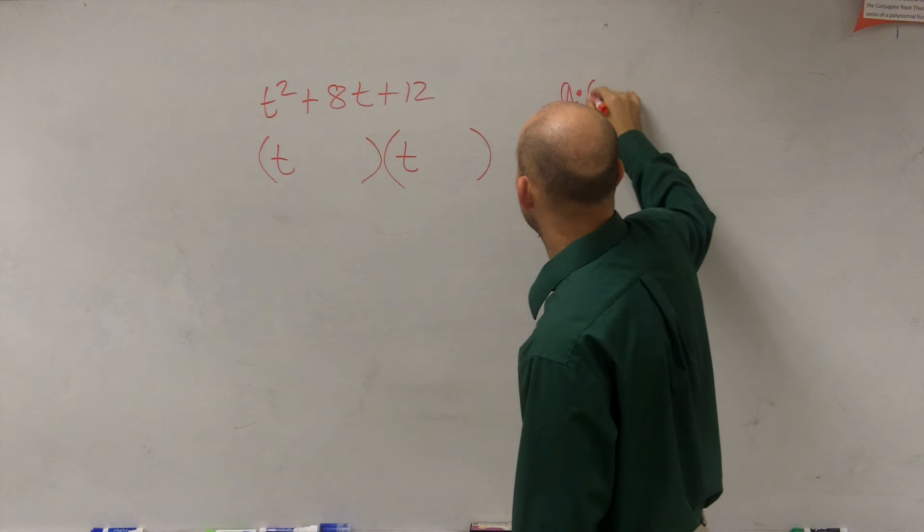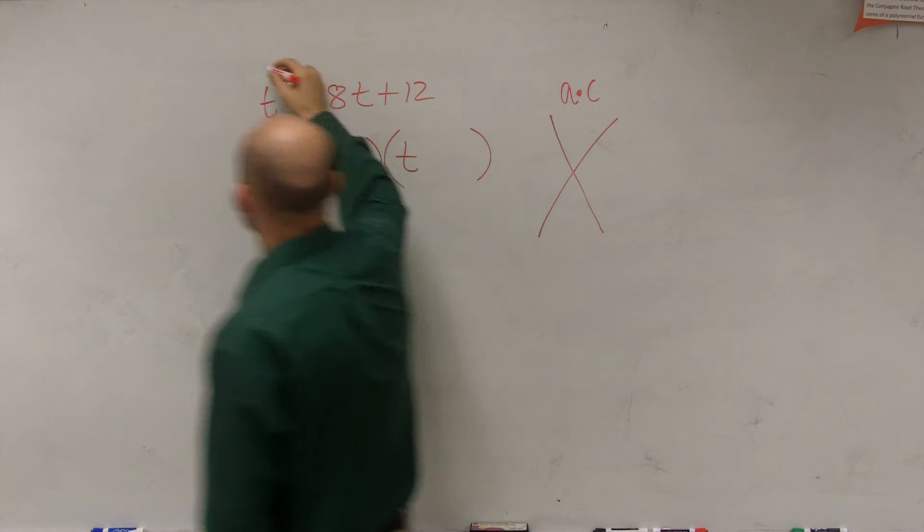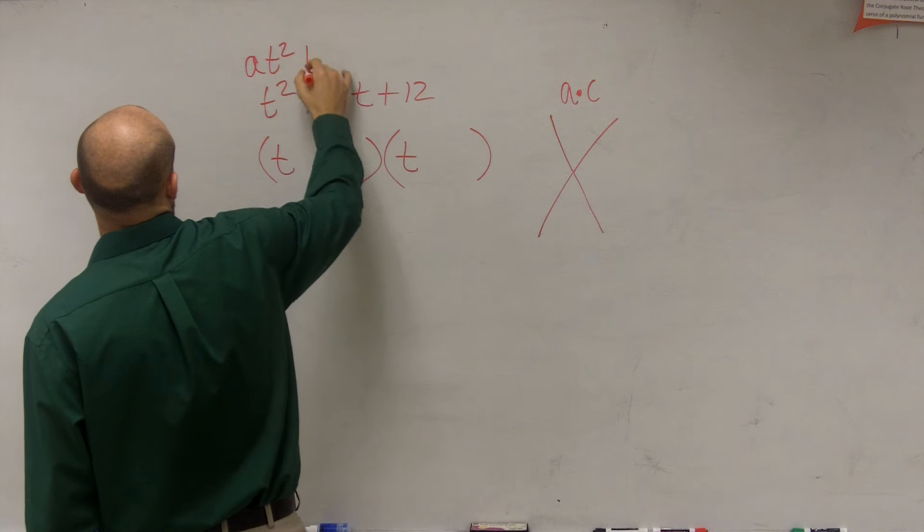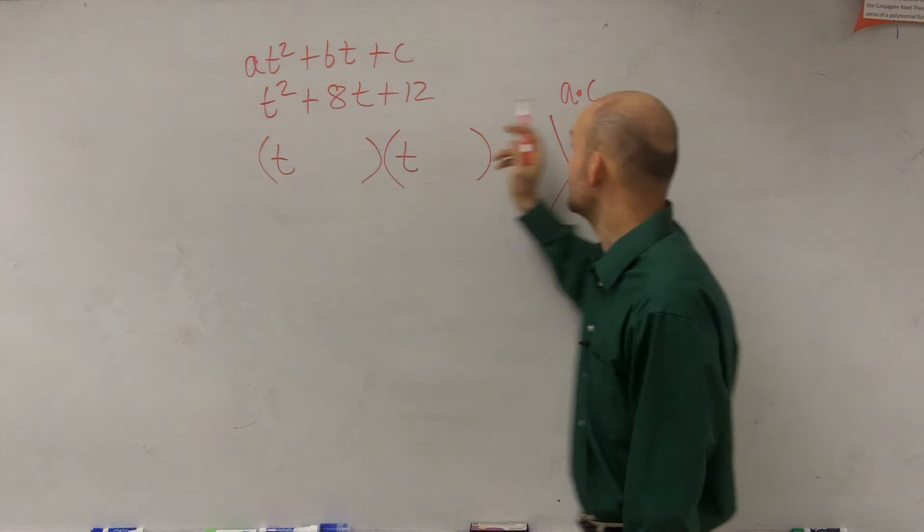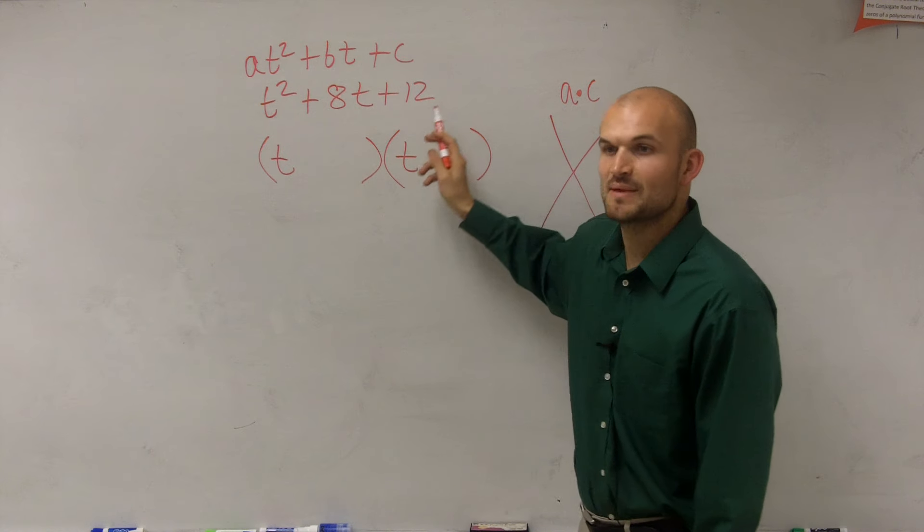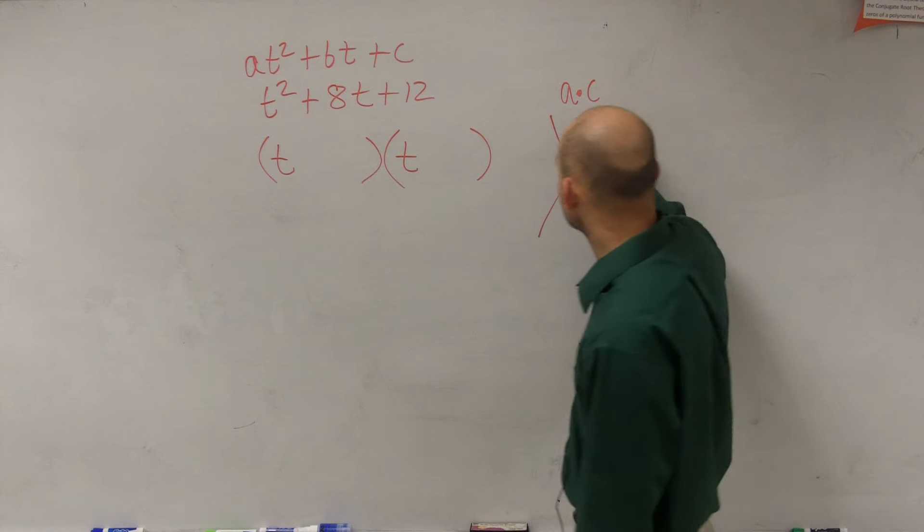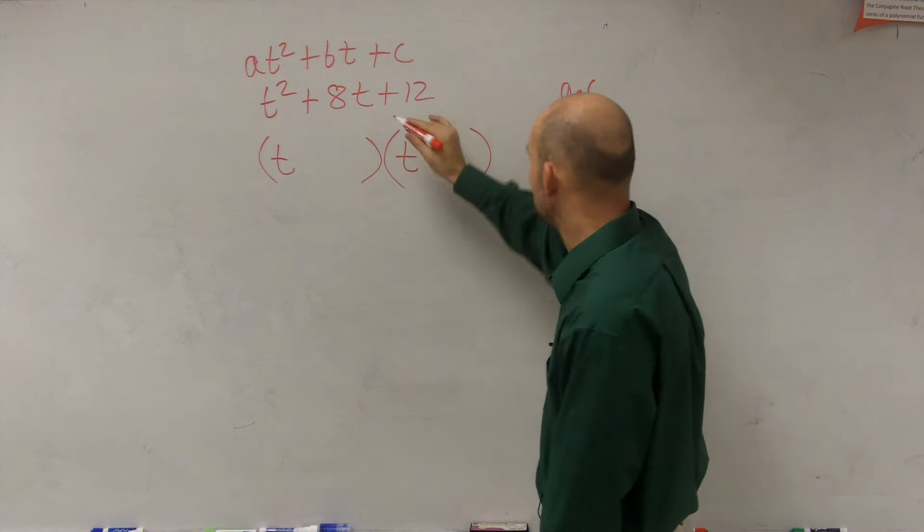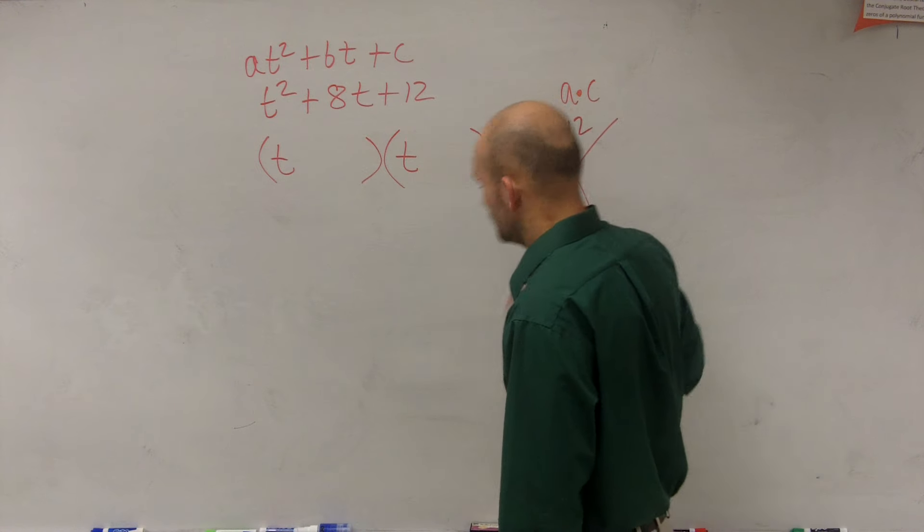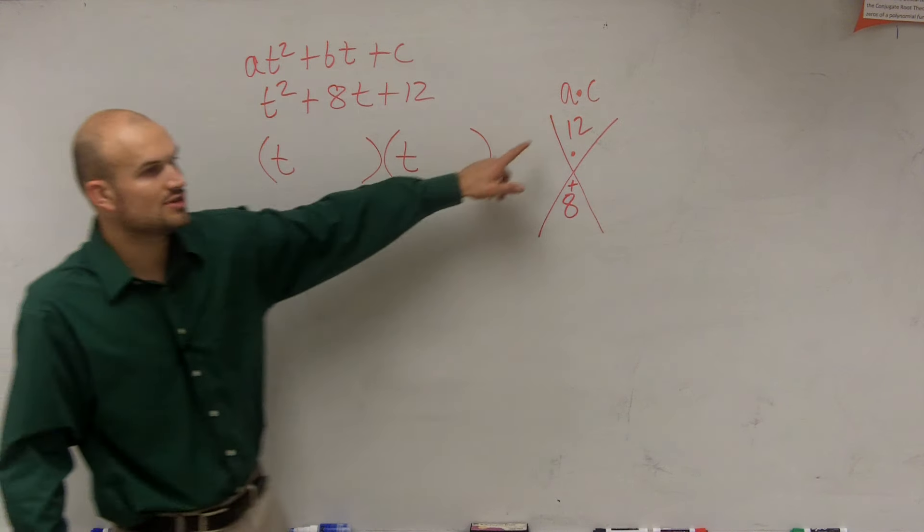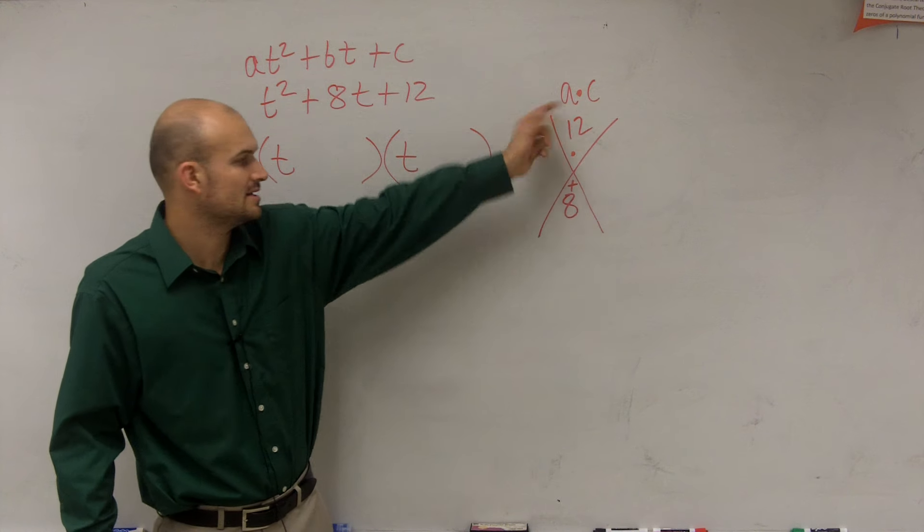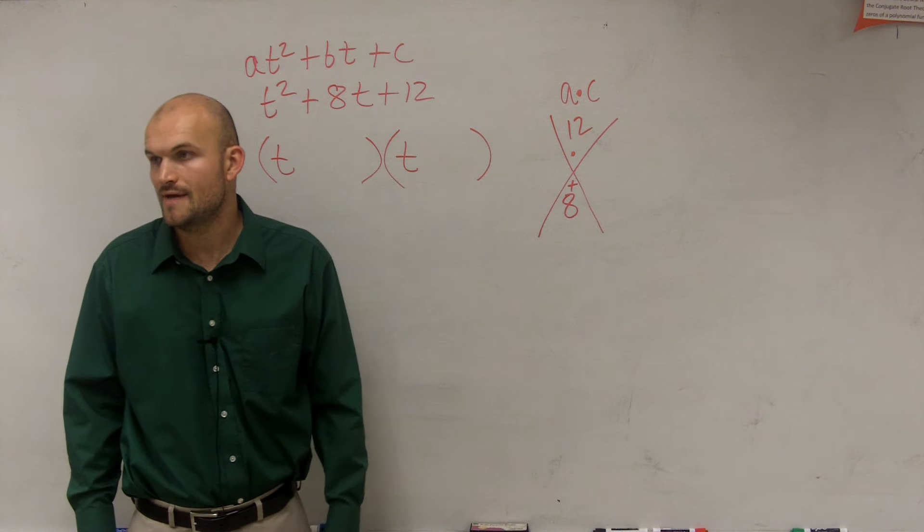Up top, I write a times c, where a times c, where a is your coefficient of t squared, which in this case is 1. And then c is my constant. So a times c is 12. And then b is 8. If you guys want to write that down, it's a very, very helpful hint to do. What two numbers do you multiply to get to your constant, but then add to get to your middle term?